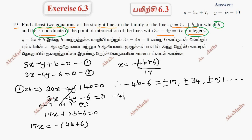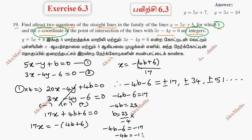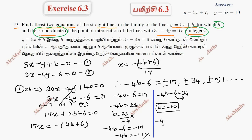Testing the case minus 4b minus 6 equals minus 7: this gives minus 4b equals minus 11, which is not an integer. Adding the case plus or minus 34: if minus 4b minus 6 equals 34, then b equals negative 10. If minus 4b minus 6 equals minus 34, then minus 4b equals minus 28, so b equals 7.